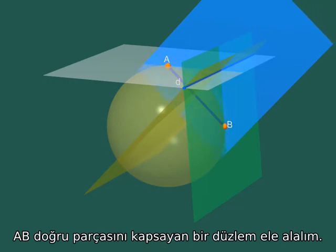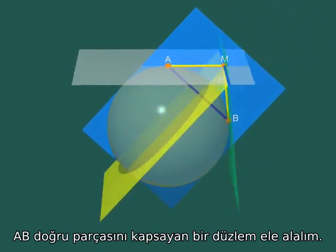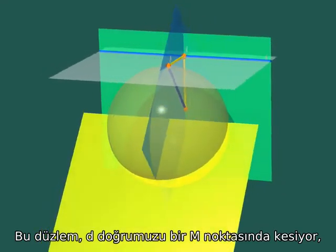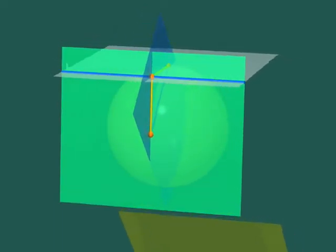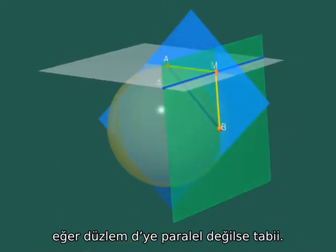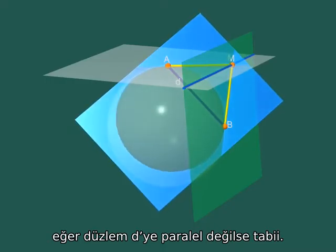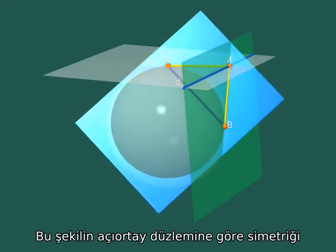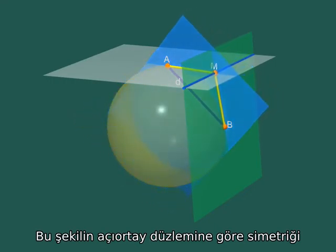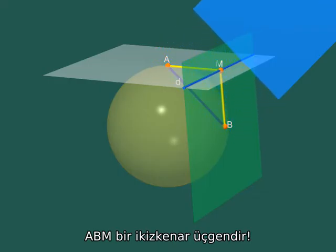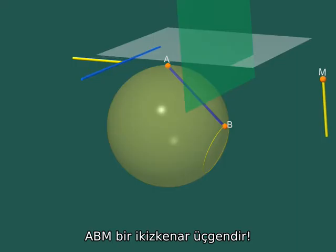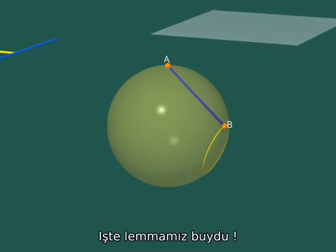Choose some plane containing the segment AB. It intersects the line D in a point M. The triangle A-B-M is isosceles. The symmetry of the figure with respect to the bisecting plane shows that A-M and B-M have the same length. Here it is. That was our lemma.